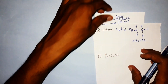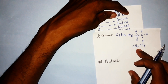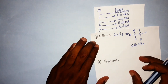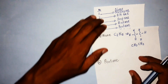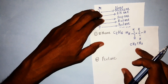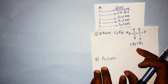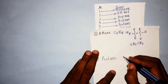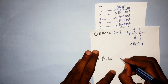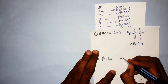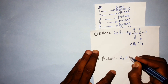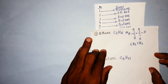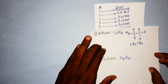Now let us go to pentane. 'Pent-' means five, so the number of carbon atoms is five. Therefore the molecular formula becomes C₅H₁₂, since 5×2+2=12 hydrogen atoms.